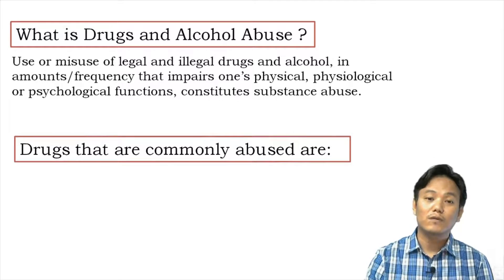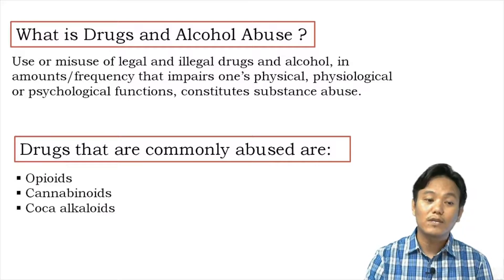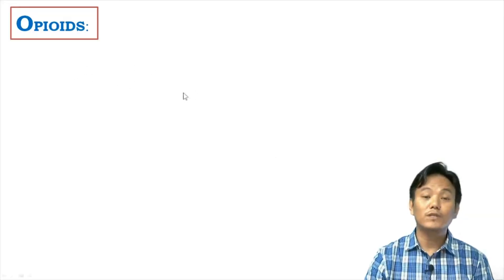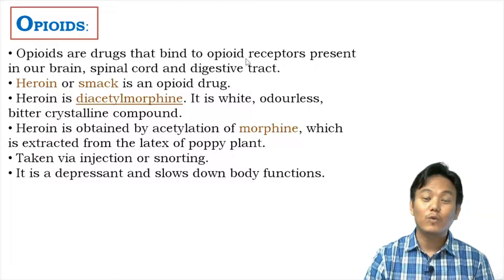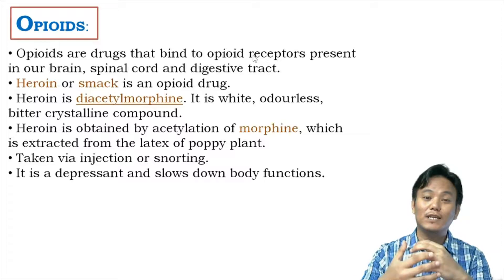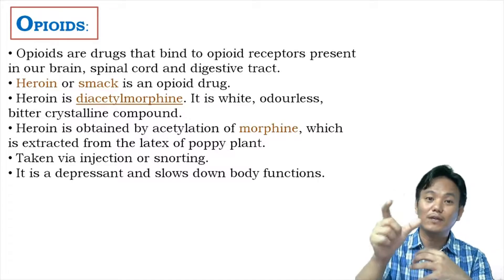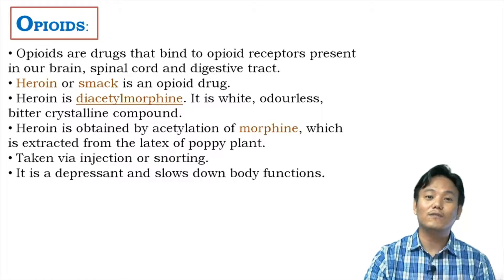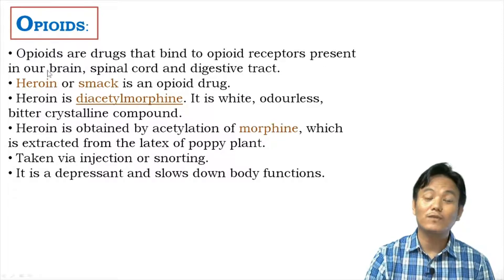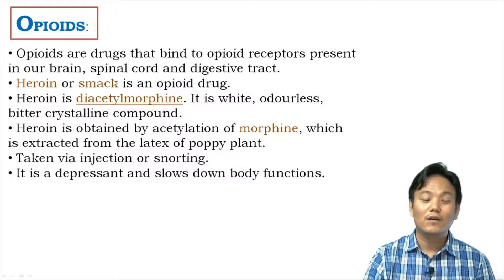There are three groups of drugs commonly abused by people: opioids, cannabinoids, and coca alkaloids. Opioids are drugs that bind to opioid receptors present in our brain, spinal cord, and digestive tract. Receptors are cellular receptors present on the surface of the cell, with the capacity to bind with specific chemicals thereby bringing about specific cellular changes.